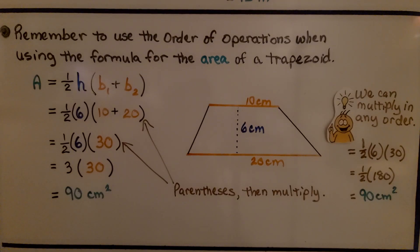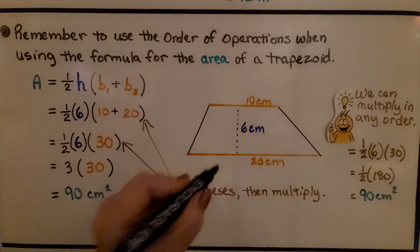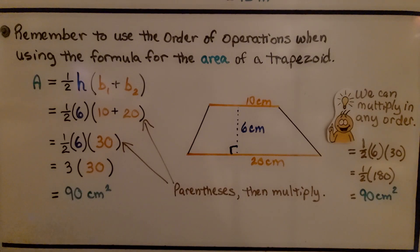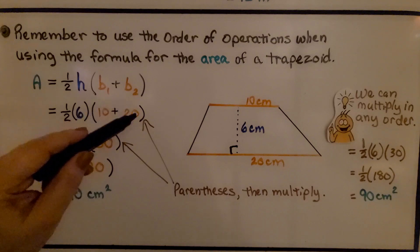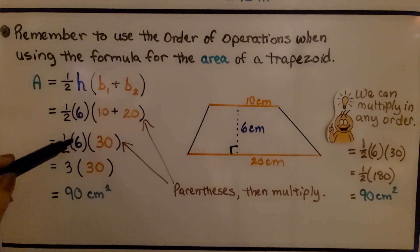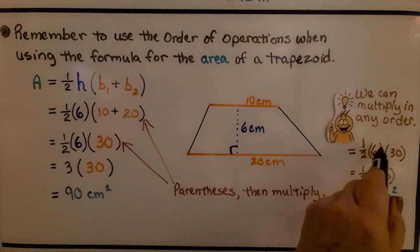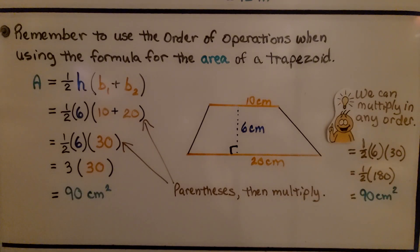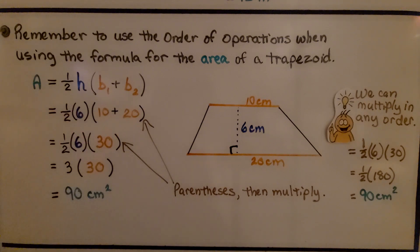Remember to use the order of operations when using the trapezoid area formula. Here base 1 is 10 cm, base 2 is 20 cm, and height is 6 cm. We do 10 plus 20 first to get 30, then half times 6 equals 3, and 3 times 30 equals 90 centimeters squared. Alternatively, we could do 6 times 30 to get 180, then multiply by half to still get 90 centimeters squared. The key is to resolve the parentheses first, then multiply in any order.